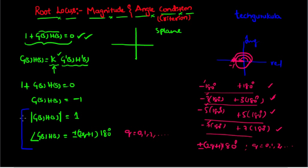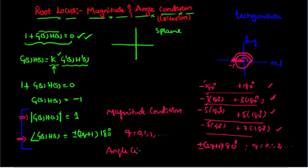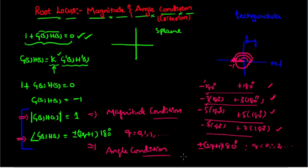This condition — the magnitude equals 1 — is known as the magnitude condition. The angle condition states that the angle of G(s)·H(s) equals ±(2q+1)×180°. Any point present on the root locus must satisfy both these conditions. These two are the basic stepping stones for the definition of root locus, and all other construction rules we will see in further videos are based on these important results.